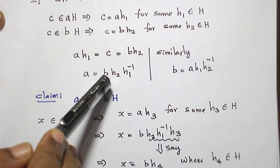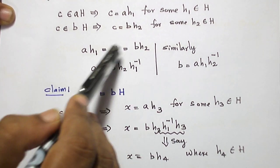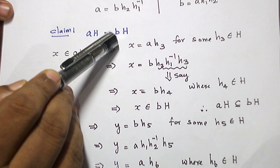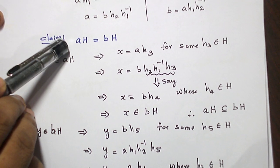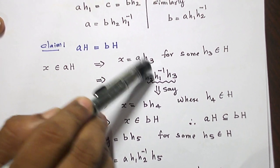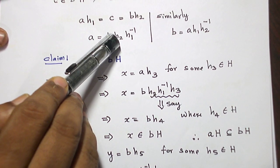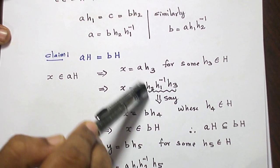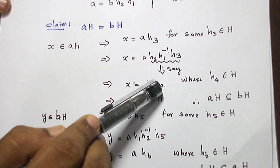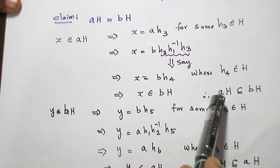If I bring H₁ to the right-hand side, A = B·H₂·H₁⁻¹. Similarly, if I bring H₂ to the left-hand side, B = A·H₁·H₂⁻¹. Now, let us take one element in AH and prove it is in BH. I take an element in AH of the form A·H₃. Since A = B·H₂·H₁⁻¹, substituting it and multiplying all elements of H gives again an element in H — I name it H₄. This takes the form B·H, so it is in the left coset BH. Therefore AH ⊆ BH.